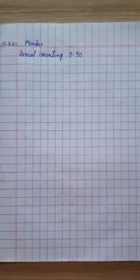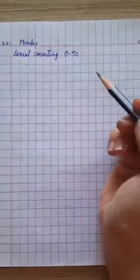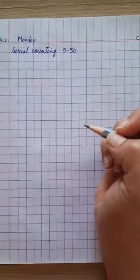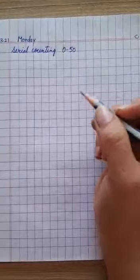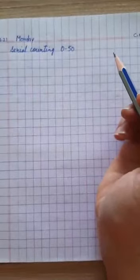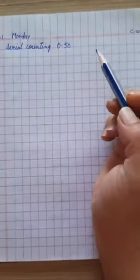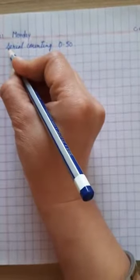Good morning students. I hope you are well at home. Today is the 15th of March, Monday. It's your maths class. Let's do revision of serial counting from 0 to 50. We have already done 0 to 30, now we will proceed to 50. So let's start.